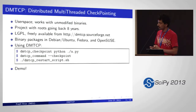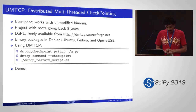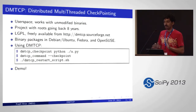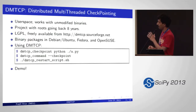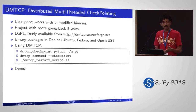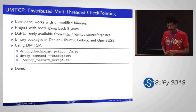We now have binary packages for various distros. Using DMTCP is really simple — it's just a set of Linux commands. You use DMTCP checkpoint with whatever your application is. In order to create a checkpoint, you just give the checkpoint command, and finally you can restart.